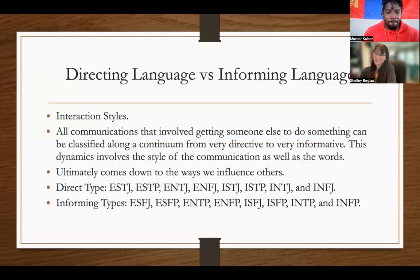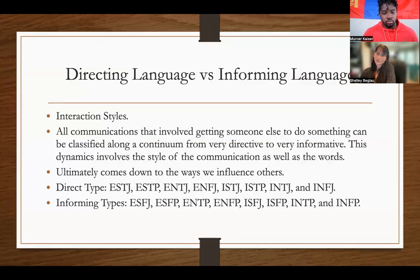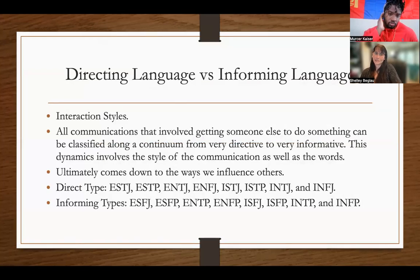So, two interaction styles: direct language versus informing styles. All communications that involve getting someone else to do something can be classified along a continuum from very directive to very informative. This dynamic involves the style of communication as well as the words. Ultimately, it comes down to ways that we influence others. Direct people tend to be concise and to the point, and informative people tend to beat around the bush and give you a lot of information you don't need.